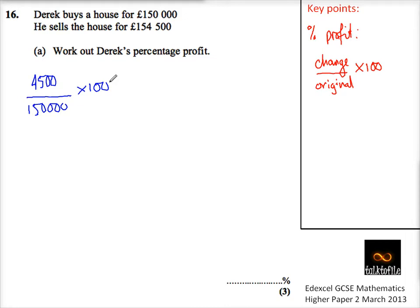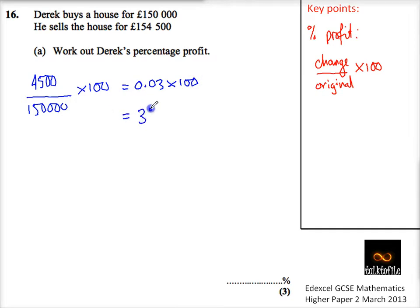So on your calculator, 4,500 divided by 150,000 is 0.03, times by 100, which is obviously just going to come out as 3% profit. So the answer will be 3%.